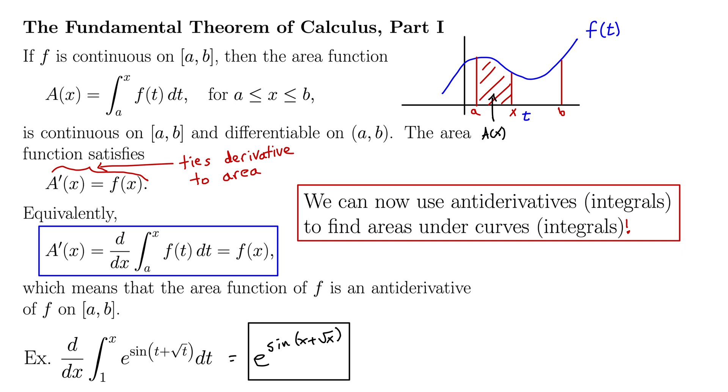So probably the easiest points you'll get on an exam is these fundamental theorem of calculus part one questions or on a final. But unfortunately, one of the biggest places where students lose points is also here because they spend a bunch of time trying to integrate a function that's impossible to integrate. So be on the lookout for that.